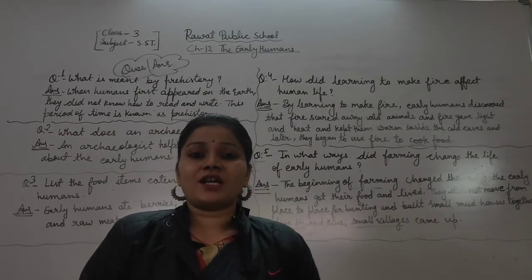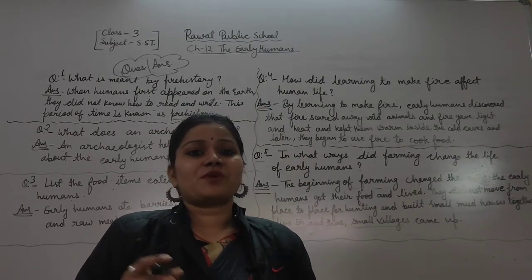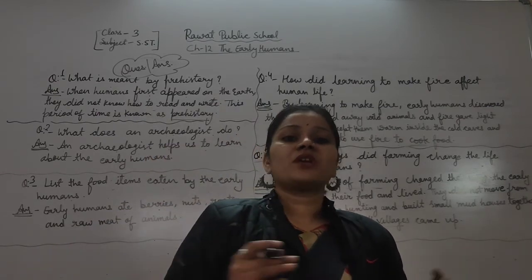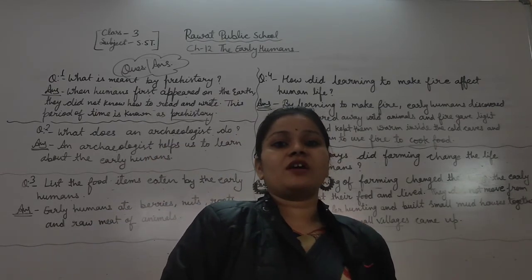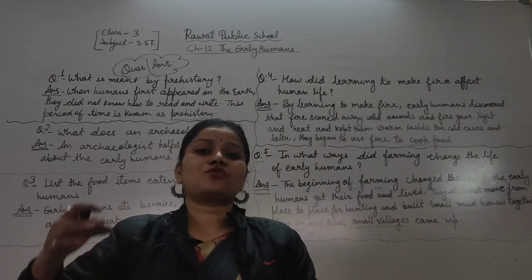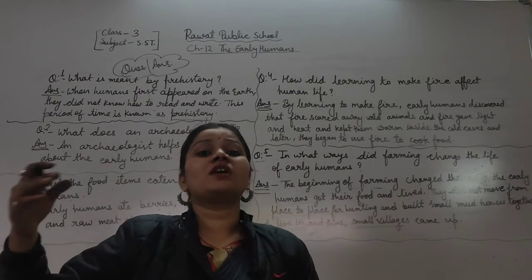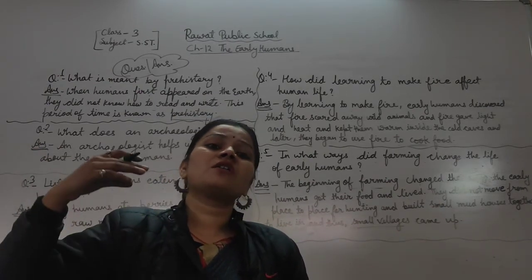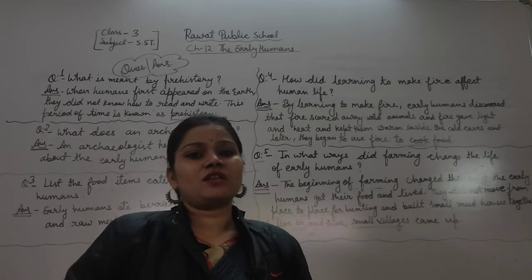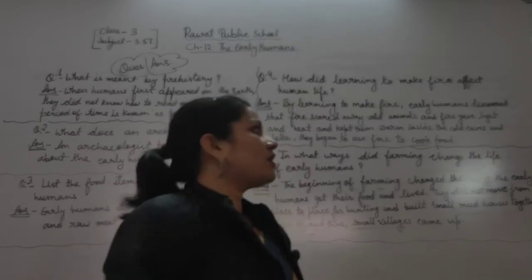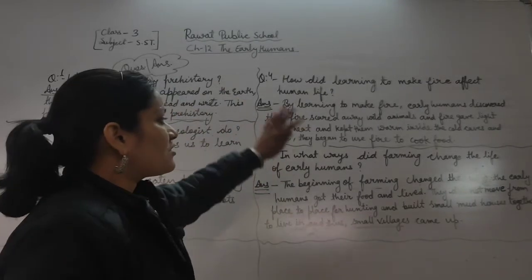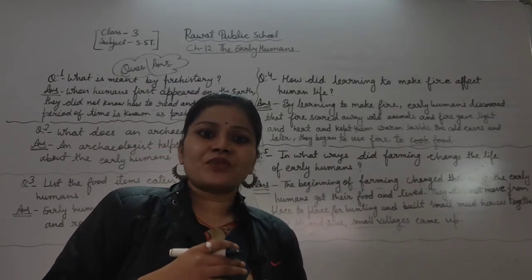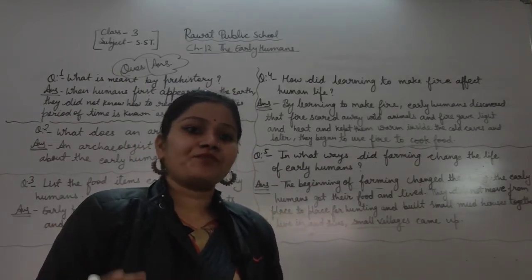When early humans started living in groups with houses built close together, small villages began to form — chote chote gaon banne lage. Phir in chote gaon se धीरे धीरे cities bane, aur aise humara civilization bhi hua. That means our towns, cities, and civilizations all developed from this beginning of farming and settled life.